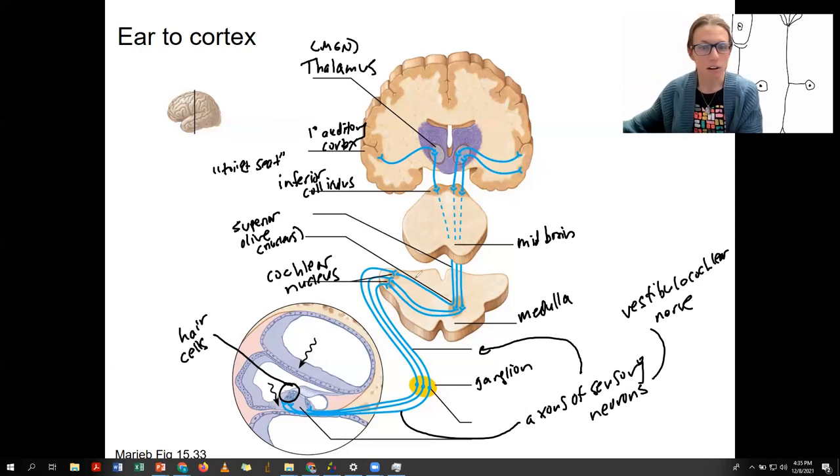All right. So these are the synapses. You've got the ganglion, cochlear nucleus, one, two, olivary nucleus, colliculus, thalamus, and then finally traveling to the cortex for perception.